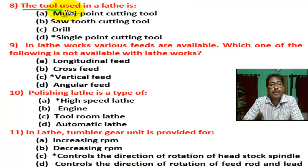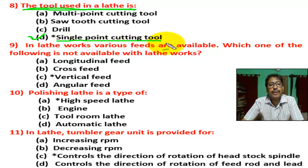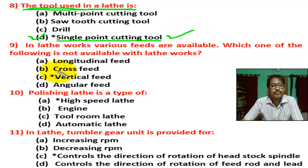Question number eight: the tool used in lathe work? There are four options. Correct answer is D — single point cutting tool. In lathe, a single point cutting tool is used.